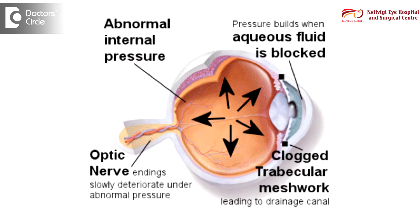In certain circumstances, this trabecular meshwork, which is at the corner of the eye, gets blocked by a natural tissue of the eye called the iris. When the iris blocks the trabecular meshwork, we call this angle closure glaucoma.